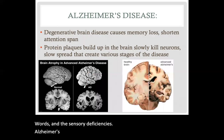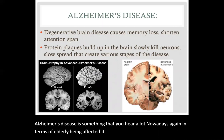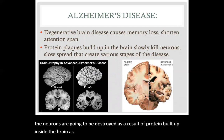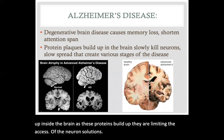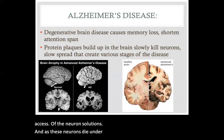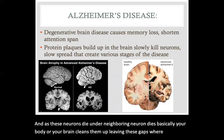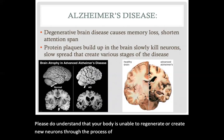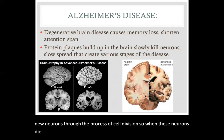Alzheimer's disease is something you hear a lot about nowadays, particularly affecting the elderly. It is a degenerative brain disease where neurons are destroyed as a result of protein buildup inside the brain. As these proteins build up, they limit the access of neurons to nutrients. As these neurons die and neighboring neurons die, your brain cleans them up, leaving gaps where neurons used to be. Your body is unable to regenerate or create new neurons through cell division, so when these neurons die, you are literally losing them forever.